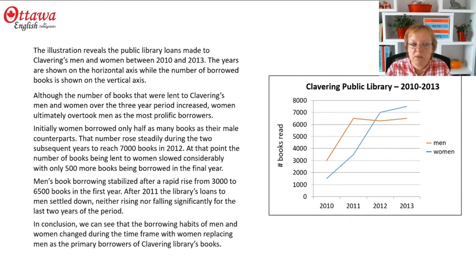Initially, women borrowed only half as many books as their male counterparts. That number rose steadily during the two subsequent years to reach 7,000 books in 2012. At that point, the number of books being lent to women slowed considerably, with only 500 more books being borrowed in the final year. Men's book borrowing stabilized after a rapid rise from 3,000 to 6,500 books in the first year. After 2011, the library's loans to men settled down, neither rising nor falling significantly for the last two years of the period.